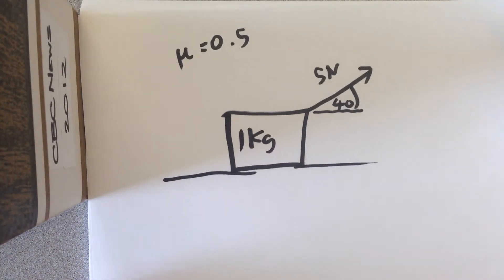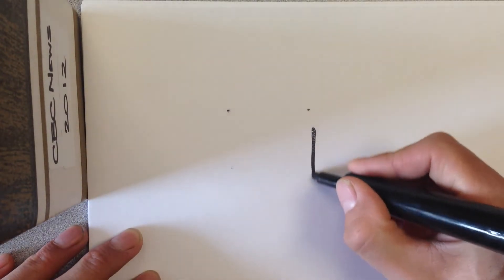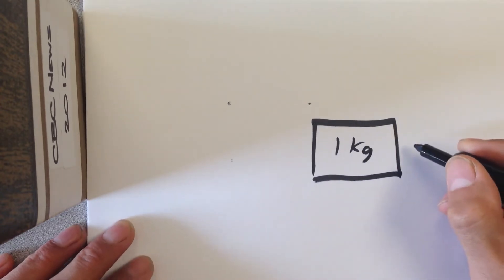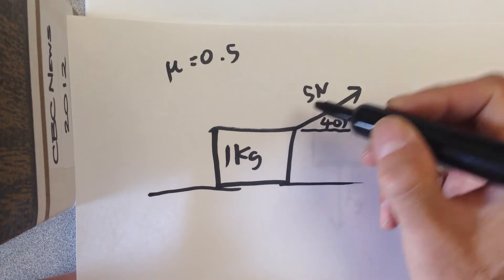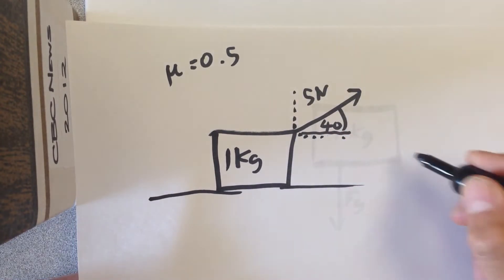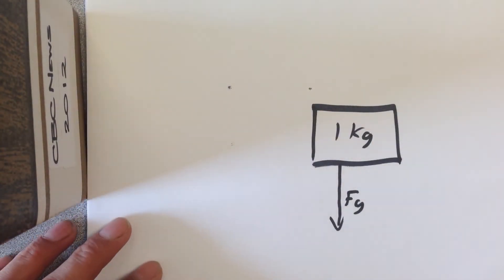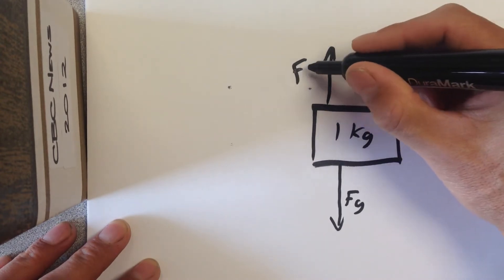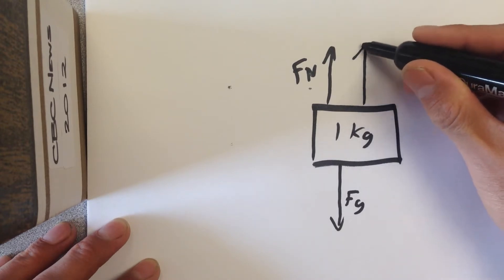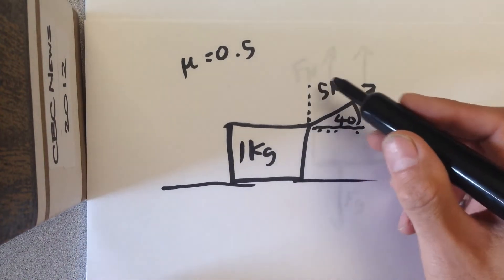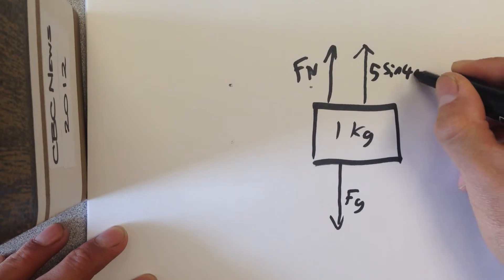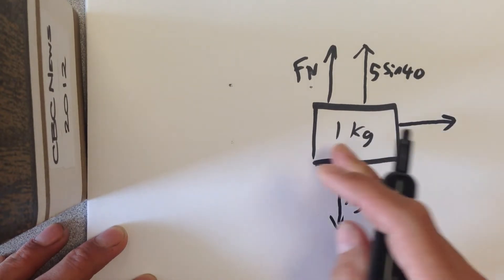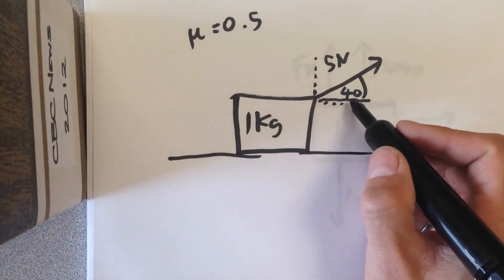Drawing a free body diagram of this situation with all forces labeled: the block has a mass of one kilogram with gravity pulling it down. Because the force is applied at an angle, it has a component pulling it upward and a component pulling it forward. Upward, we have the normal force and the perpendicular component of the applied force, which is 5 times the sine of 40 degrees. The parallel component of the applied force is 5 times the cosine of 40 degrees.